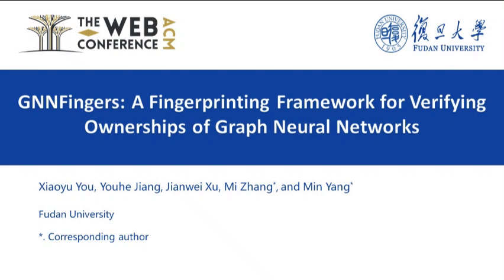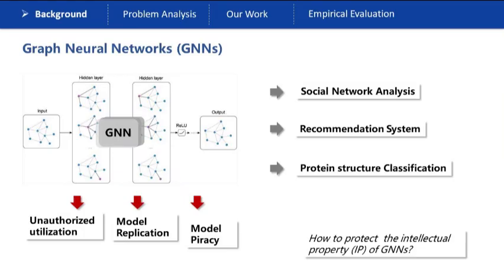I sincerely appreciate all reviewers and chair's time and assistance. I am excited to present our paper GNN-Effingers. Graph neural networks have been applied in various mission-critical applications. As the research community and industry sectors invest heavily in the development of innovative GNN models and training techniques, there arises a compelling need to protect these intellectual assets from unauthorized utilization, model replication, or model piracy attack. This is also named protecting the intellectual property, IP, of GNNs.